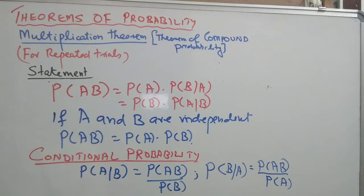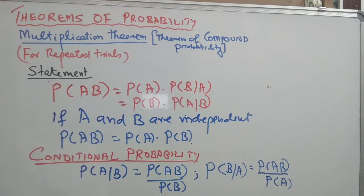So we have discussed two theorems: the addition theorem for simultaneous trials, and the multiplication theorem for repeated trials. The application of both these theorems is incorporated in Bayes theorem.